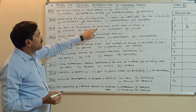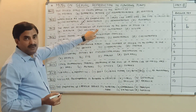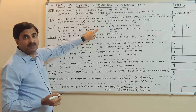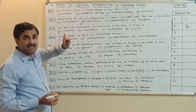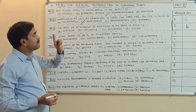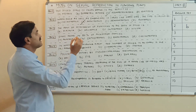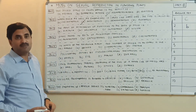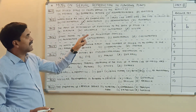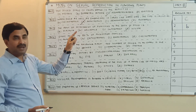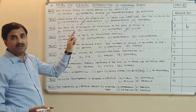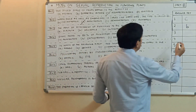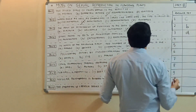The point of attachment of the funiculus to the body of the ovule — always remember the point of attachment of the funiculus to the body of the ovule is the hilum. Whenever we study the structure of the ovule, we study this hilum. The point of attachment of the funiculus to the body of the ovule is called the hilum. Question number three answer is D.